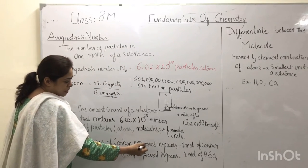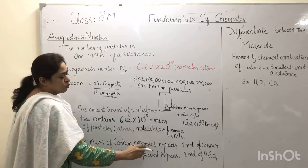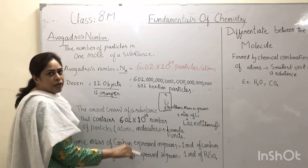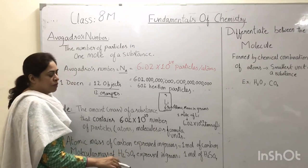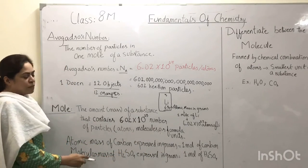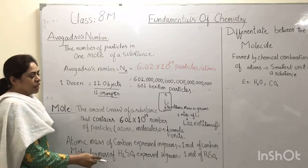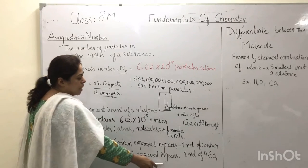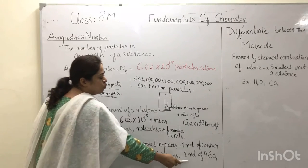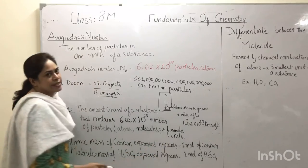Similarly, the atomic mass of carbon expressed in grams will give you 1 mole of carbon. And the molecular mass of sulfuric acid expressed in grams will give you 1 mole of sulfuric acid.